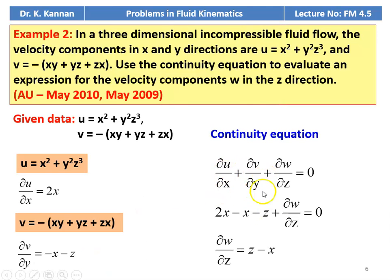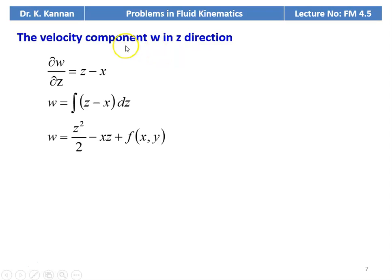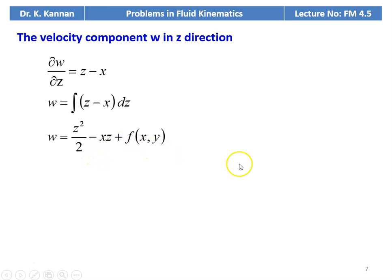The continuity equation: dou u by dou x plus dou v by dou y plus dou w by dou z equal to 0. Substituting: dou u by dou x equal to 2x, dou v by dou y equal to minus x minus z, plus dou w by dou z equal to 0. From the expression, dou w by dou z equal to z minus x. Now integrating, the velocity component w in the z direction: dou w by dou z equal to z minus x. Integrating, w equal to integral of (z minus x) dz, which gives z squared by 2 minus xz plus a constant which is a function of x and y.